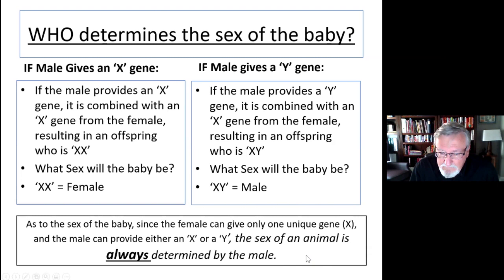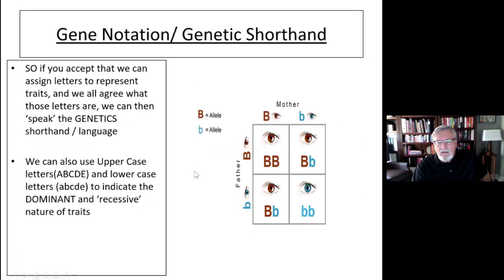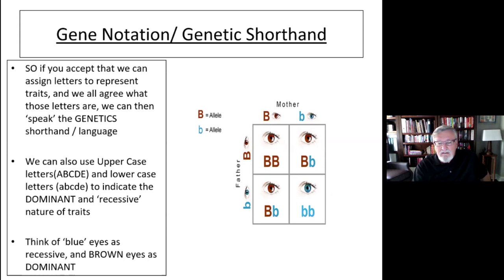Now we go back to our shorthand. If we assign letters to represent traits and we all agree what these letters are, we can speak the genetic shorthand. We use uppercase and lowercase — uppercase indicates dominant, lowercase indicates recessive. Just as the example I used earlier with eye color, see the lowercase b as opposed to the uppercase B. Think of blue eyes as always recessive and brown eyes as dominant, even if they're heterozygous. Heterozygous means they are not the same. Brown-eyed people may be heterozygous or homozygous — you can't tell by looking at them.